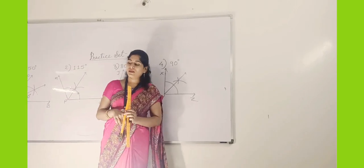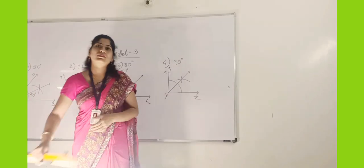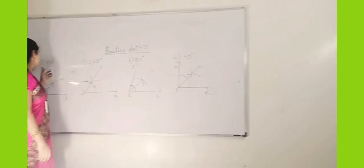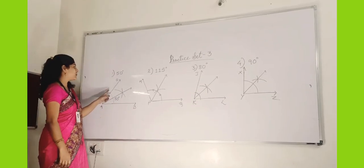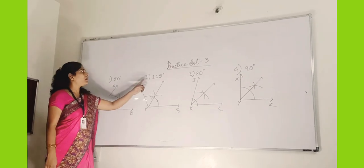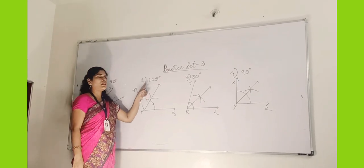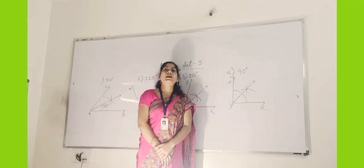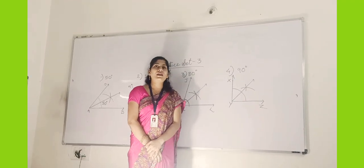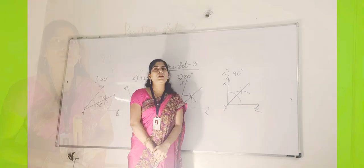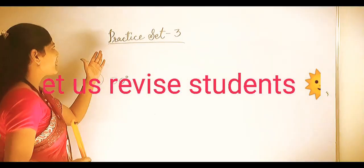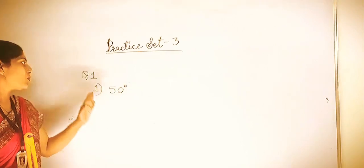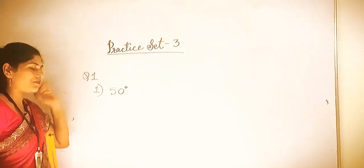Hope you understand today. Let us review: angle 50 degrees, angle 150 degrees, angle 80 degrees, and 90 degrees — try yourself. Let us start Practice Set Number 3. Question number 1 is 50 degrees. How to draw an angle — that we have done already. Take a ray, as I am telling you again.